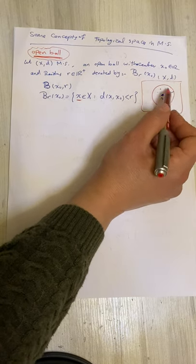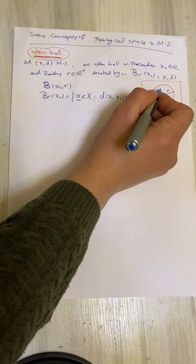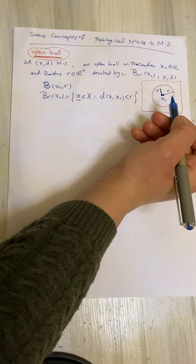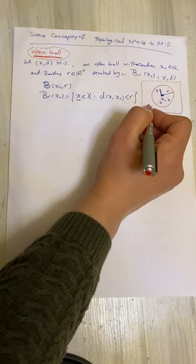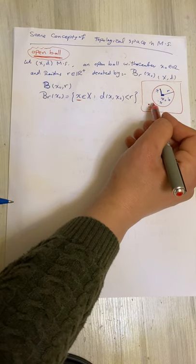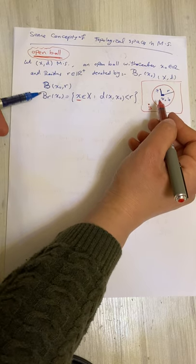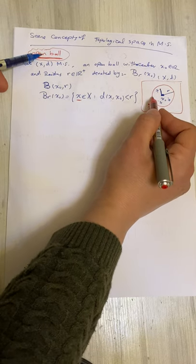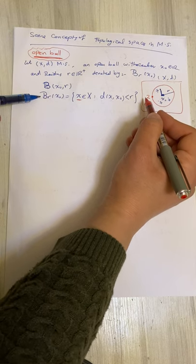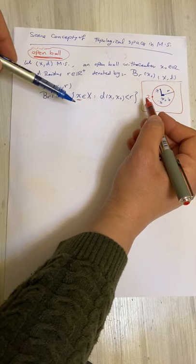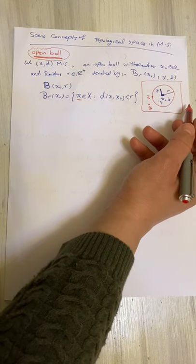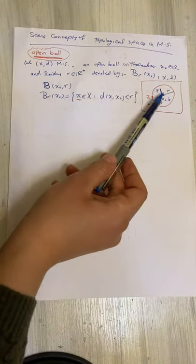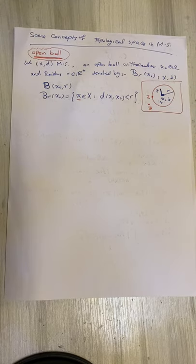Every element x inside the open ball B(r, x₀) has distance d(x, x₀) < r. If an element y is outside, its distance to x₀ is not less than r, so it is not in the open ball.